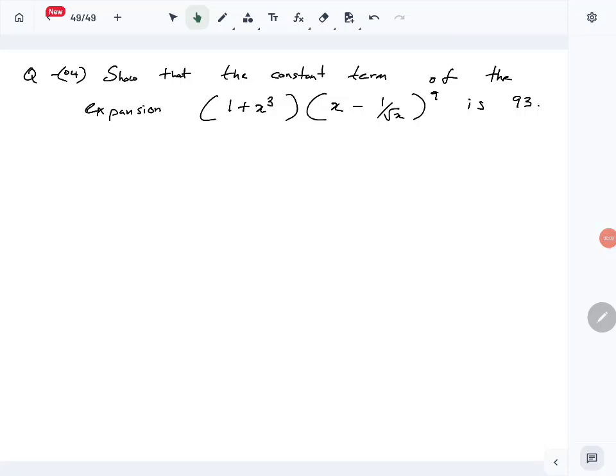Let's look at part A question number 4 of Combined Mathematics 2024 LL paper. So this is the binomial expansion question. We are asked to show that the constant term of the expansion, this expansion is 93.